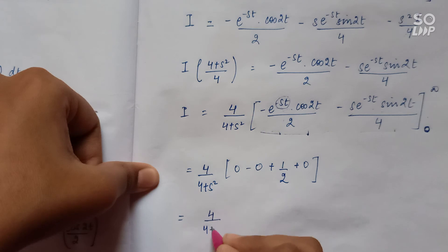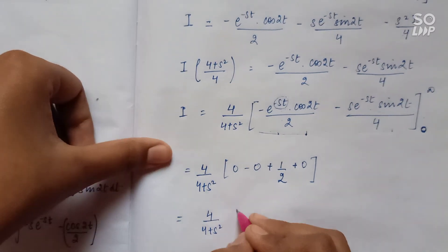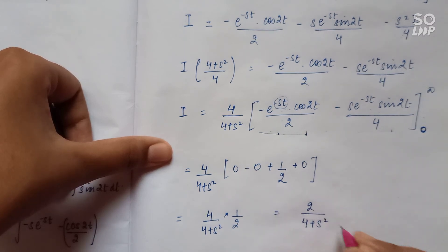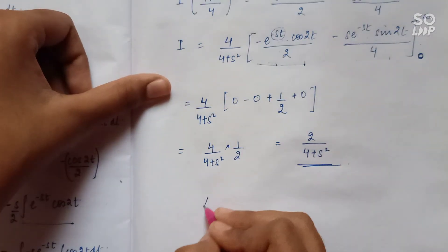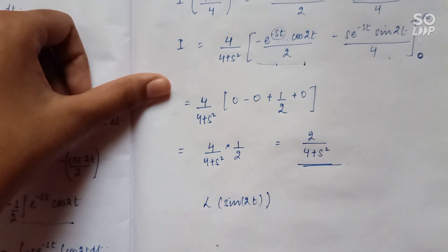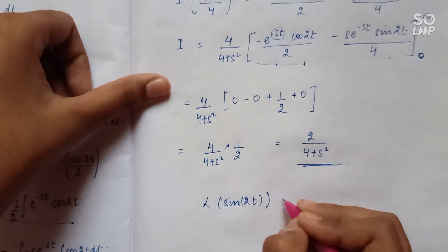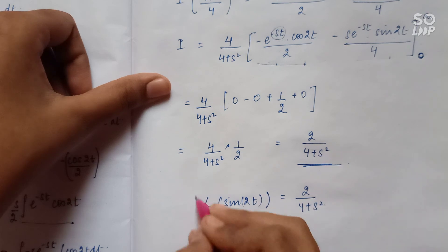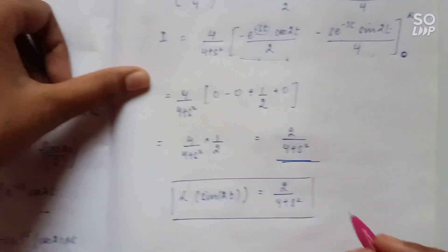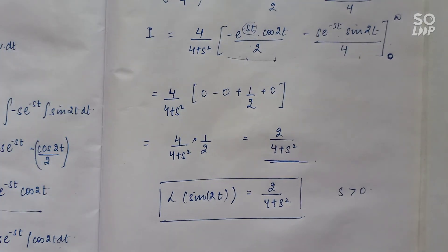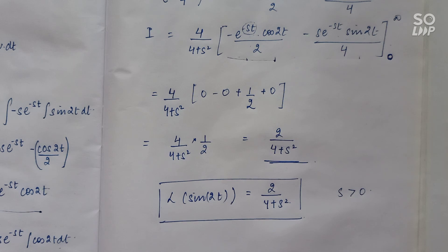So finally, we get (4/(4 + s²)) times (1/2), which is 2/(4 + s²). Therefore, the Laplace of sin(2t), after applying the integration by parts and putting in the limits, equals 2/(4 + s²), with the condition that s must be positive. That's how you find the Laplace of a given function f(t).